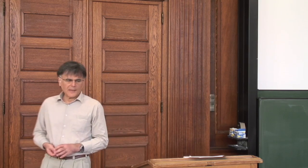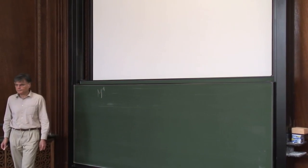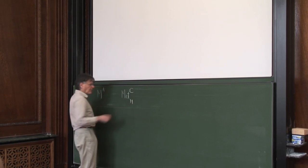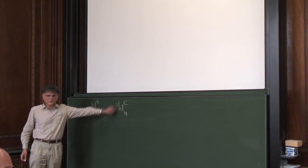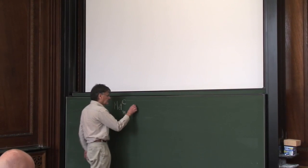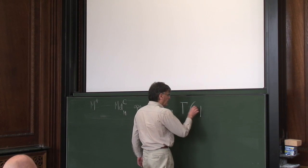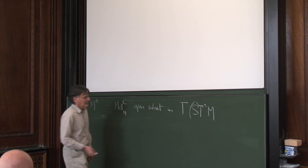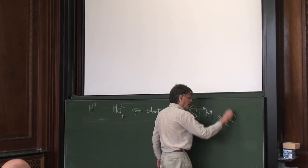In the last lecture, I introduced a d-dimensional spacetime called M, and I defined a space of complex metrics on this. An ordinary metric would be a section of the symmetric square of the tangent bundle, and we tensor that with the complex numbers.